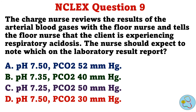Question 9. The charge nurse reviews the results of the arterial blood gases with the floor nurse and tells the floor nurse that the client is experiencing respiratory acidosis. The nurse should expect to note which on the laboratory result report? A. pH 7.50, PCO2 52mm of mercury. B. pH 7.35, PCO2 40mm of mercury. C. pH 7.25, PCO2 50mm of mercury. D. pH 7.50, PCO2 30mm of mercury.